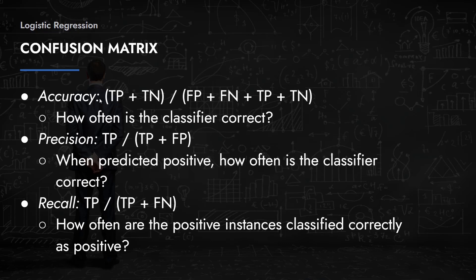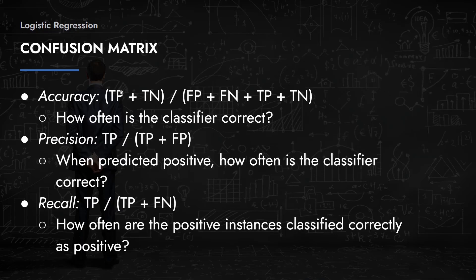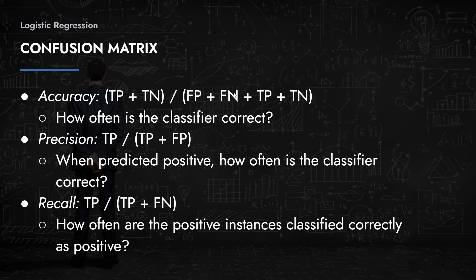Accuracy, defined earlier as correct predictions over total predictions, corresponds in the confusion matrix to (TP + TN) over (TP + TN + FP + FN). TP and TN are the correct predictions — yes correctly predicted as yes, and no correctly predicted as no. This answers the question: how often is the classifier correct? But it doesn't go into detail about what type of correct.